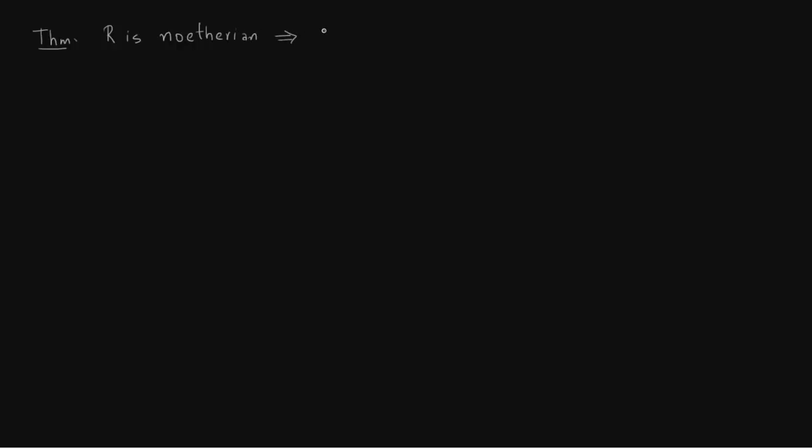On this slide we want to talk about the Hilbert Basis Theorem. The theorem is essentially a corollary of another theorem: if a ring R is Noetherian, then R[x] is also Noetherian. The corollary of this theorem is the Hilbert Basis Theorem.